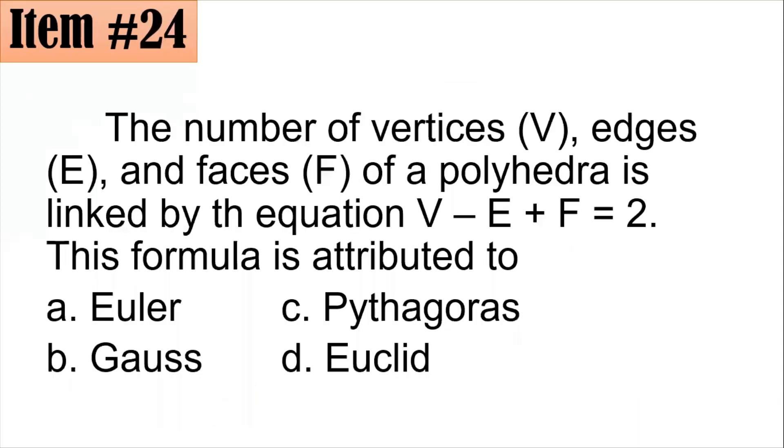24. The number of vertices V, edges E, and faces F of a polyhedra is linked by the equation V minus E plus F equals 2. This formula is attributed to: did you go for Euler, Gauss, Pythagoras, or Euclid?